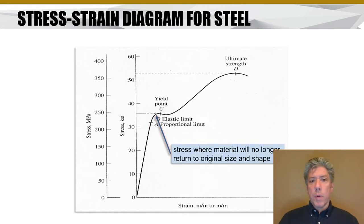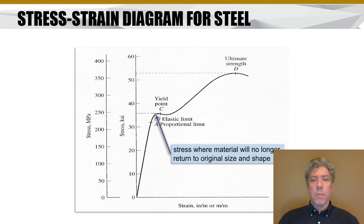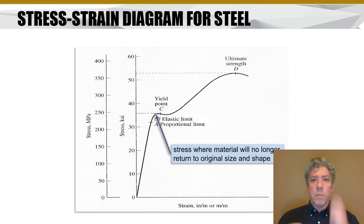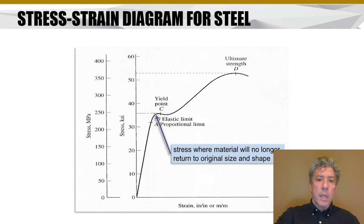Continuing along the curve, we reach point B, which is relatively close to point A for many steels. This is where the material will no longer return to its original size and shape — this point is the elastic limit. The elastic limit and the proportional limit are often considered close or the same thing, but that's not necessarily the case. The elastic limit is defined as the point where the material no longer regains its shape. We can have nonlinear deformation between 0 and B, as long as the material returns to its original shape once the load is released.